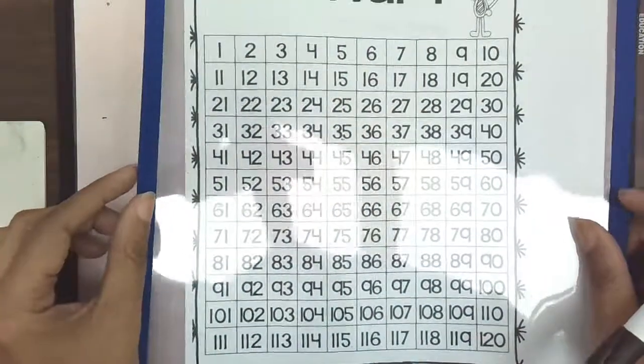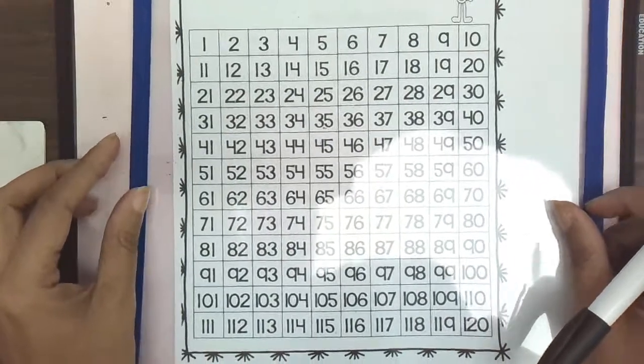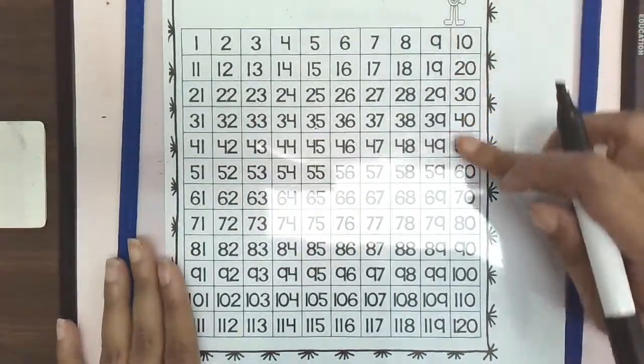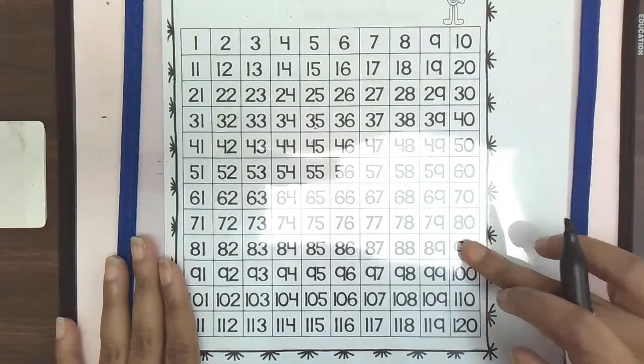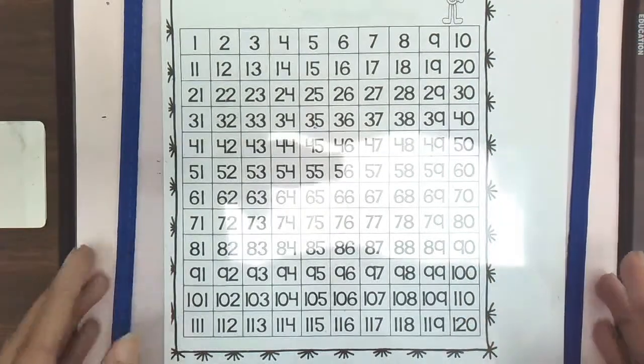Each student has a 120s chart that I sent home with them this week. And again, we're focusing on our 10s. So again, 10, 20, 30, 40, 50, 60, 70, 80, 90, 100, 110, 120.